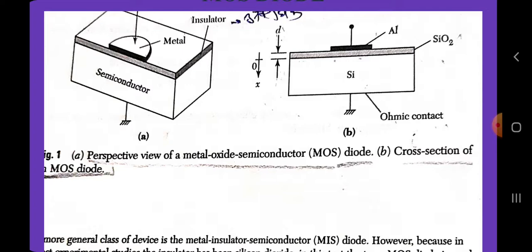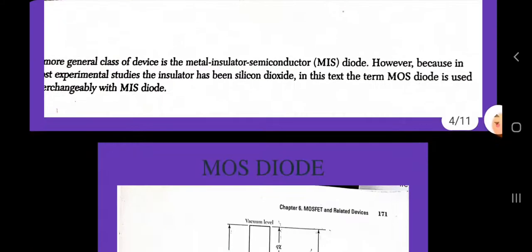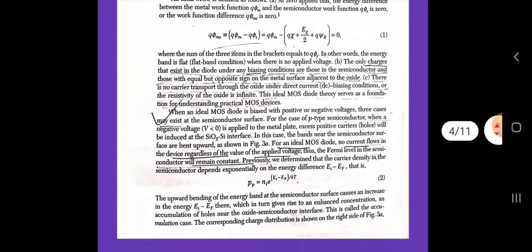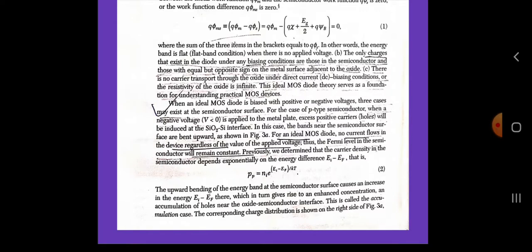Thus, the Fermi level in the semiconductor will remain constant. Previously, we determined that the carrier density in the semiconductor depends exponentially on the energy difference of the band at the semiconductor surface. This is called the accumulation case.